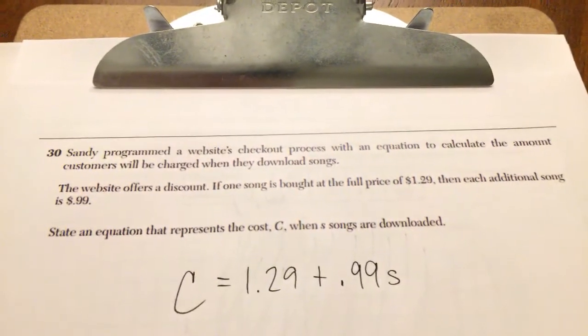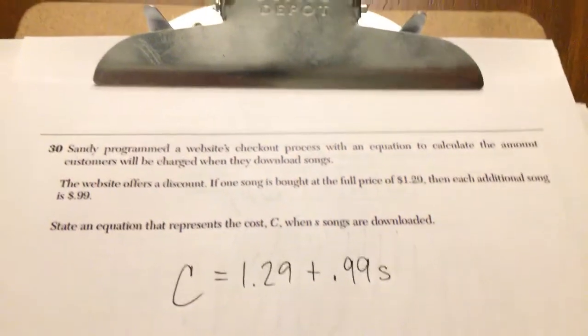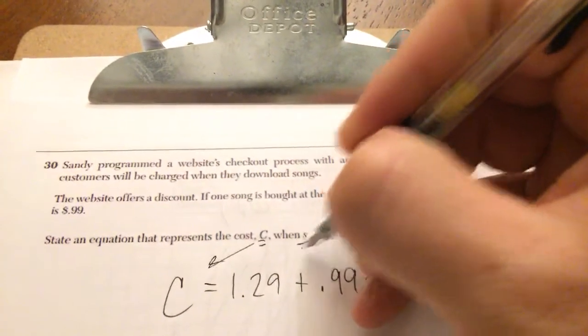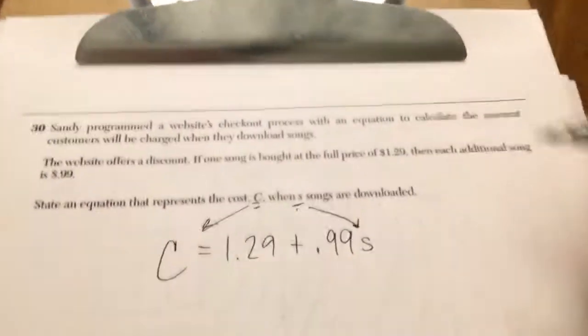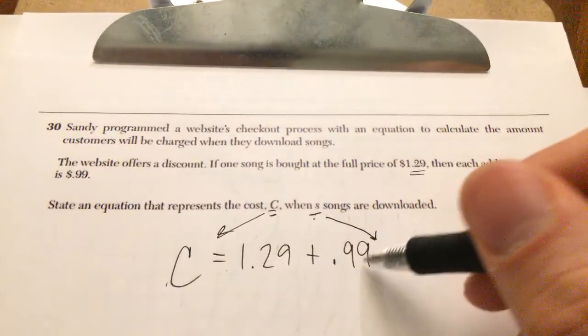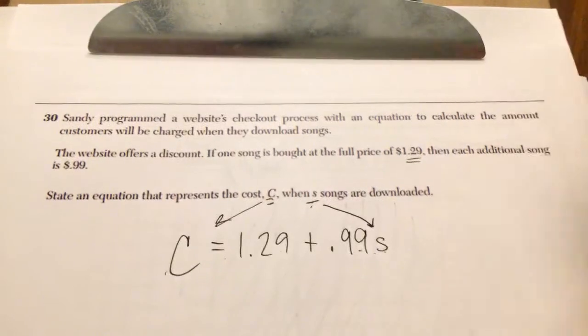Sandy programmed a website's checkout process with an equation. They're telling you to state an equation that represents the cost when S songs are downloaded. The cost is $1.29 for the flat rate and then $0.99 per song. This is your answer. All they want you to do is just state an equation.